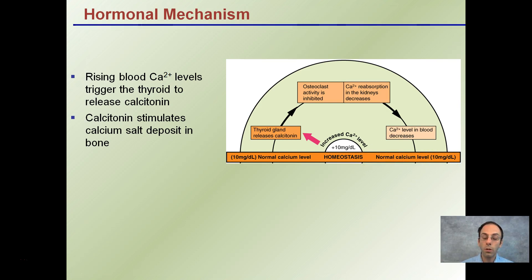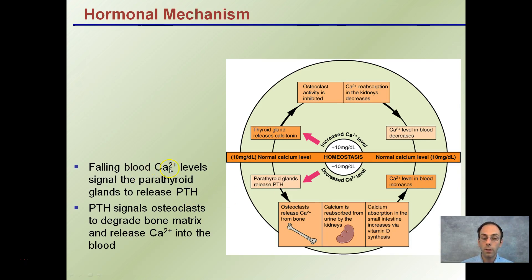On the other side, if calcium levels fall, this signals the parathyroid glands to release PTH. Osteoclasts then release calcium from the bone, and calcium is also reabsorbed from the urine by the kidneys. This increases calcium levels back to normal. So if we notice a decrease in calcium levels, osteoclasts break down bone to release calcium and maintain that vital 1% in our circulatory system.